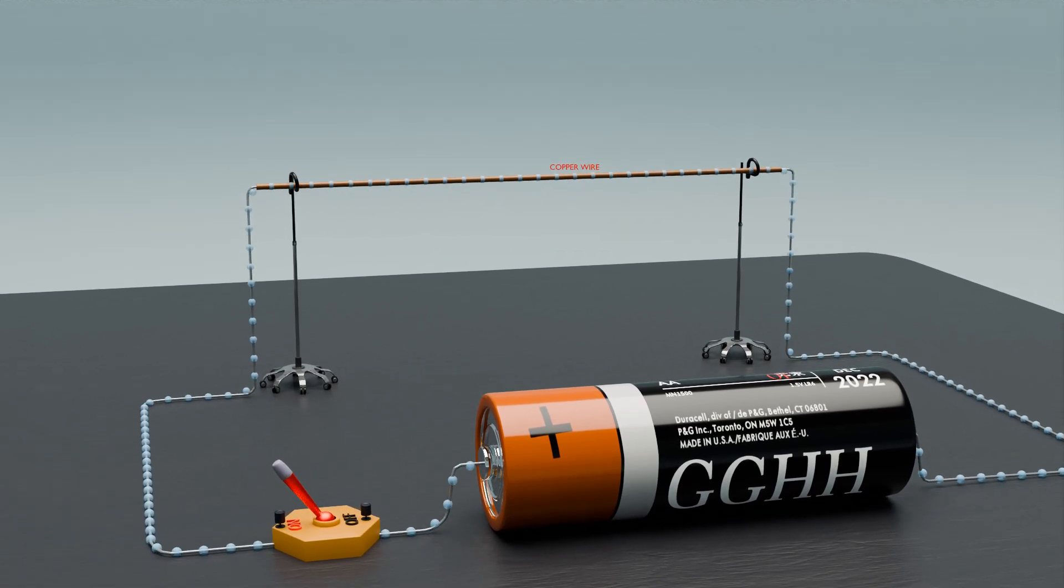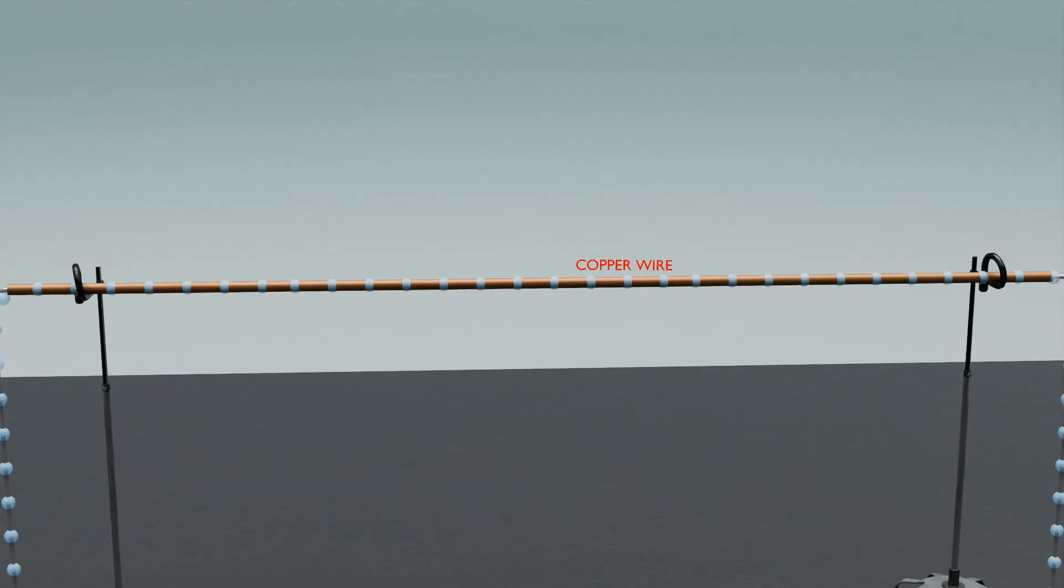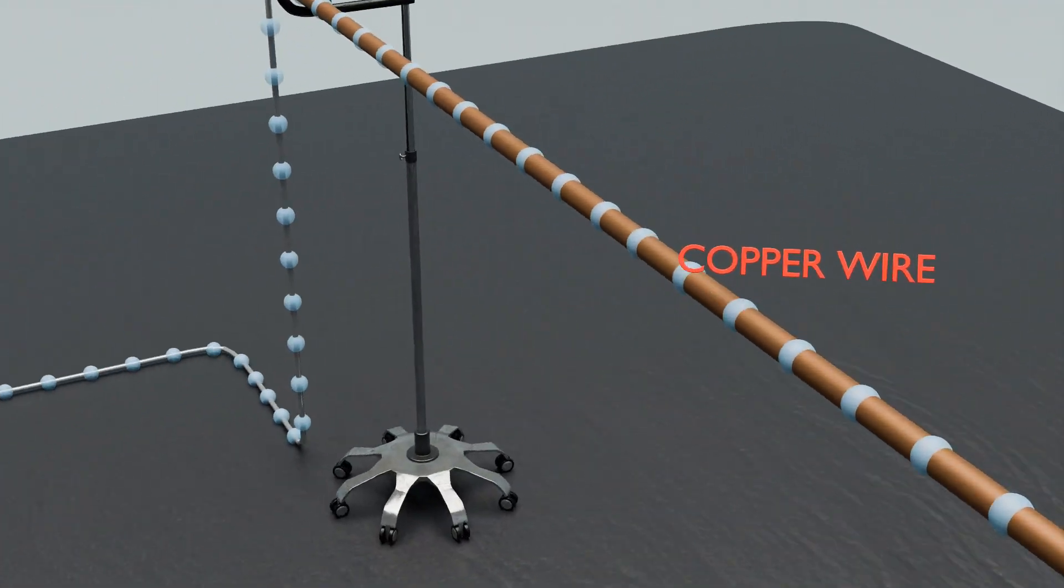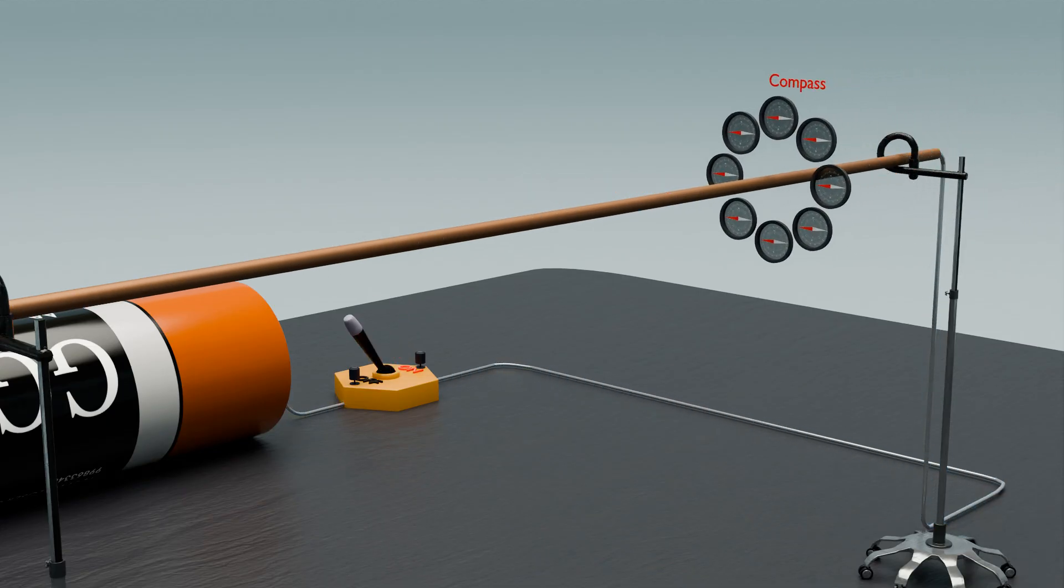Welcome to this demonstration on the magnetic effects of electric current. In this video, we'll explore how a current-carrying copper wire generates magnetic flux and observe the fascinating interactions using compasses. Let's dive in and see the principles of electromagnetism in action.